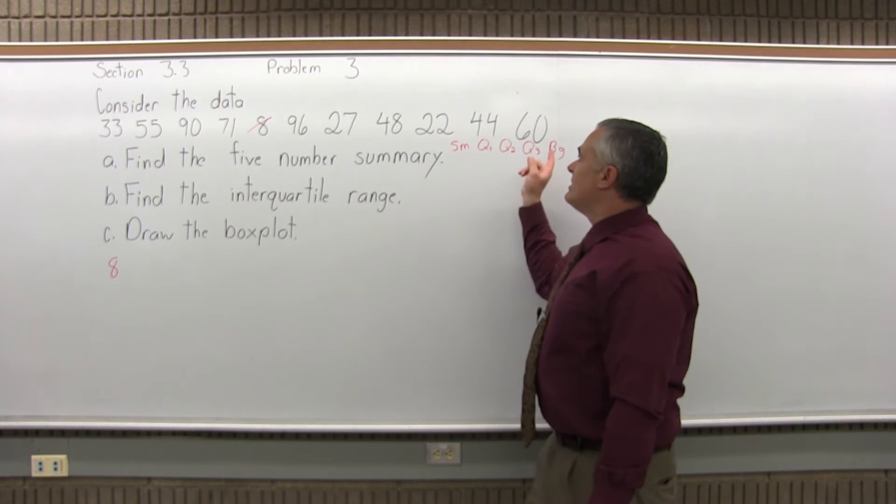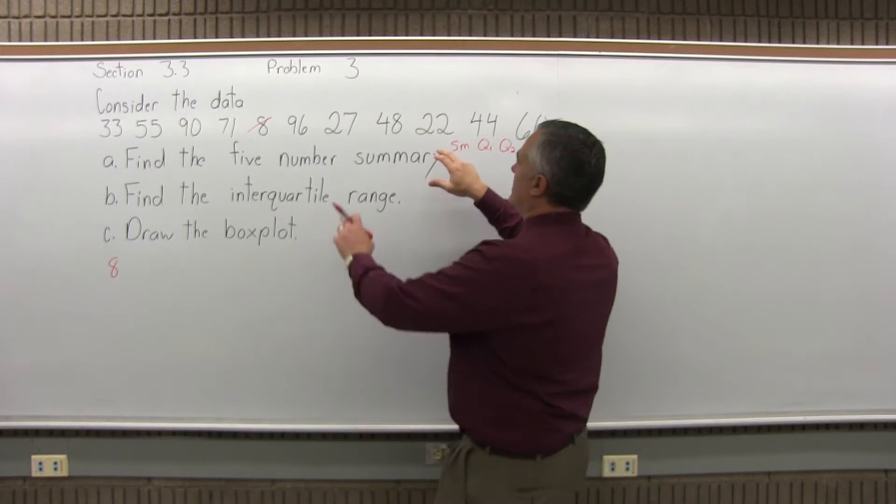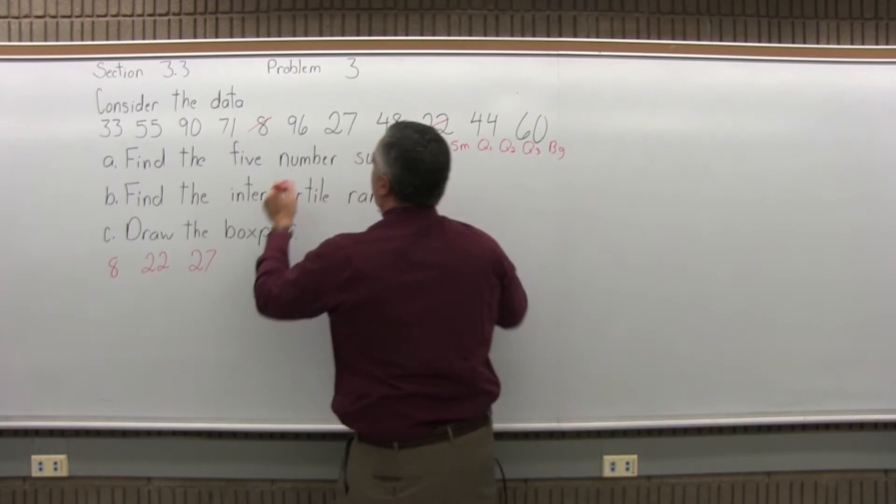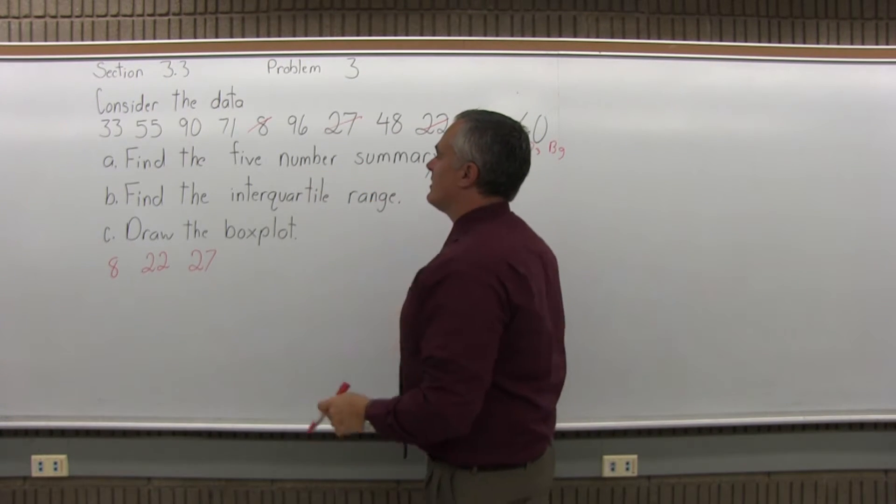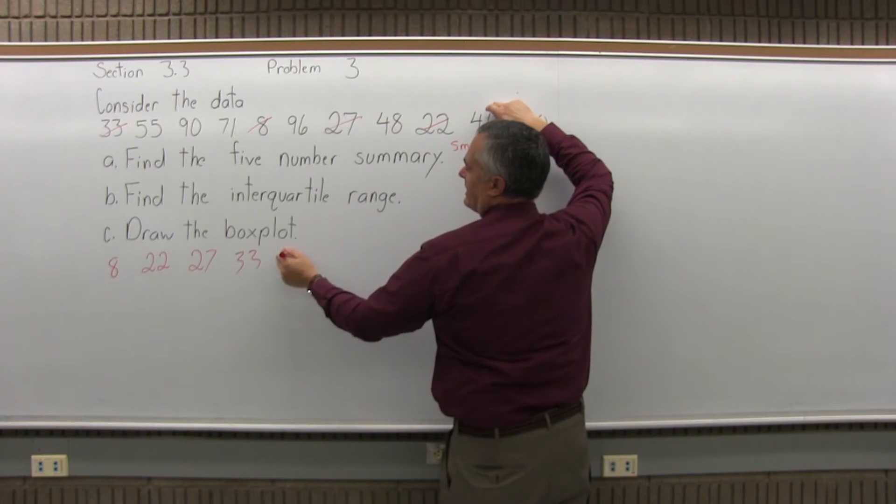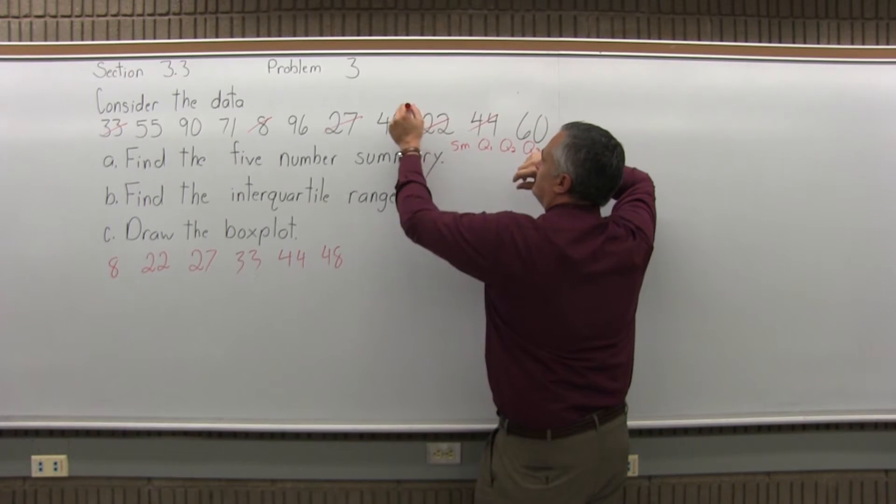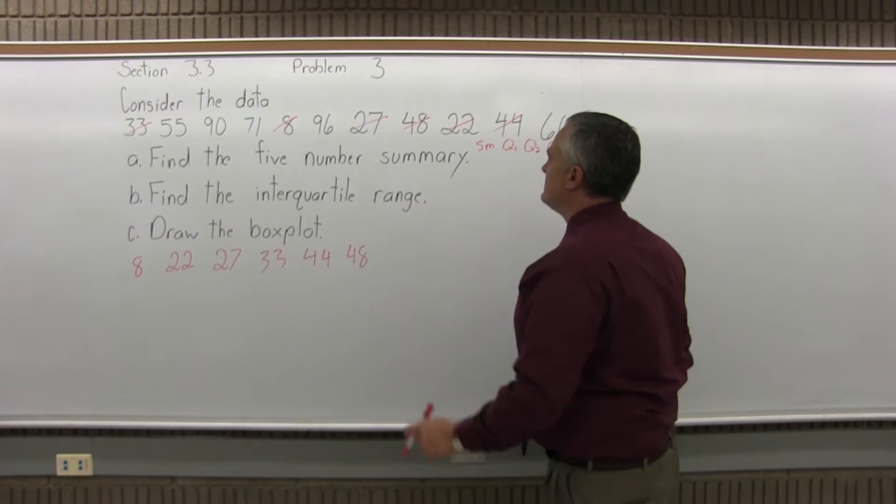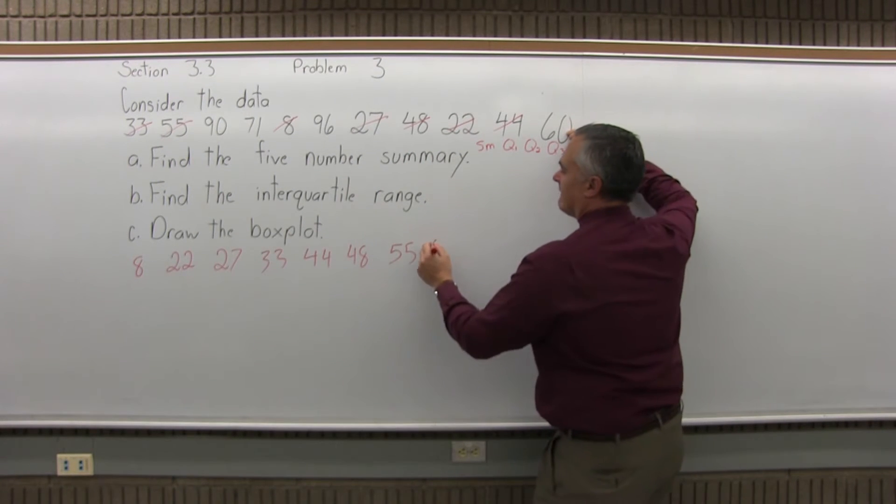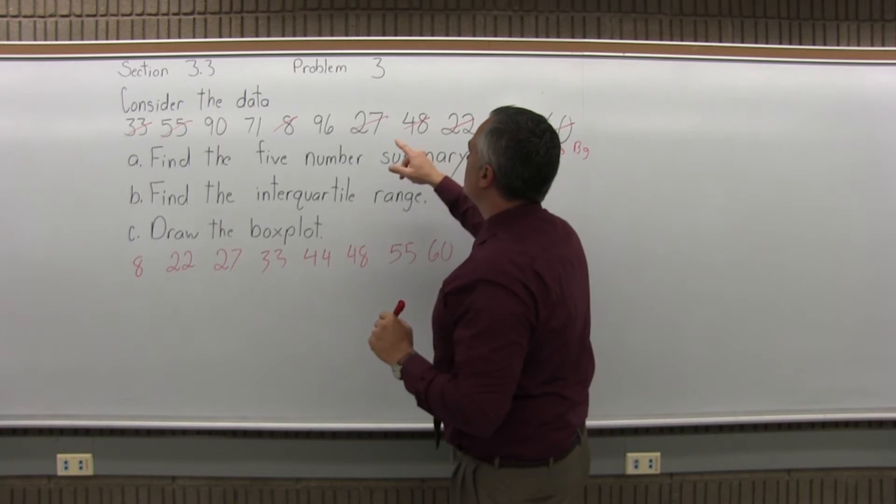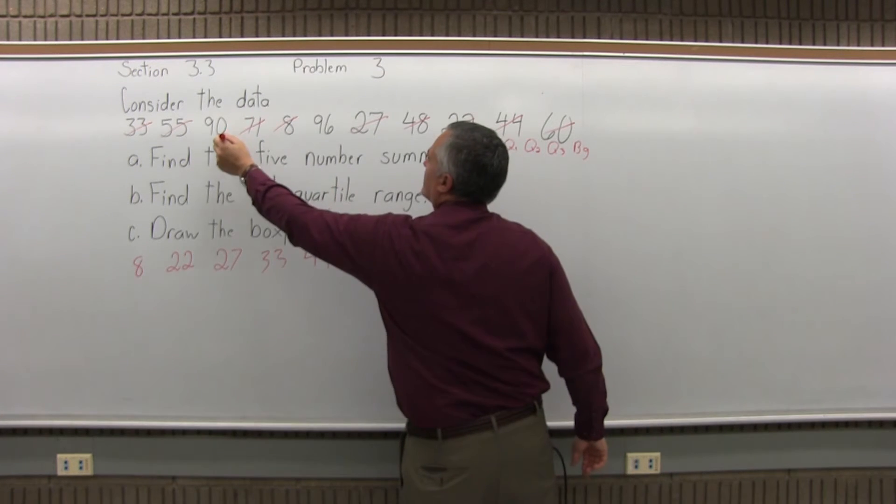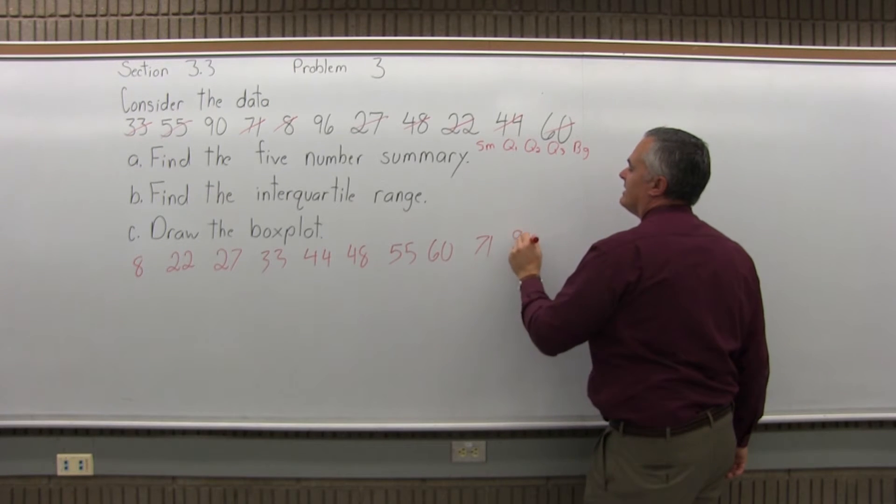I like to cross them off as I use them. As I look next, I look for things in the teens, nothing in the teens. In the 20s, I have two: 22 and 27. I have one entry in the 30s: 33. I have two in the 40s: 44 and 48. In the 50s, it's 55. In the 60s, I have 60. In the 70s, 71. In the 80s, I don't have any. And then two in the 90s: 90 and 96.